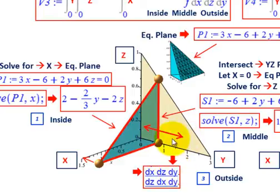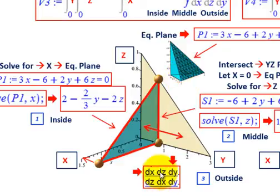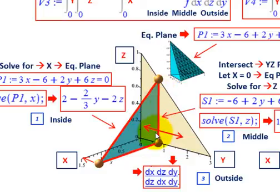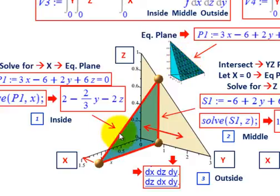For dy, that's always the direction our slice is going — the outside integral looks at how we're slicing the tetrahedron along the x, y, z axes. The middle integral dz really forms a plane between the z and y axes, where x is 0. Then dx is perpendicular to that plane — it's the hypotenuse of the right triangle we're looking at, following the equation plane.